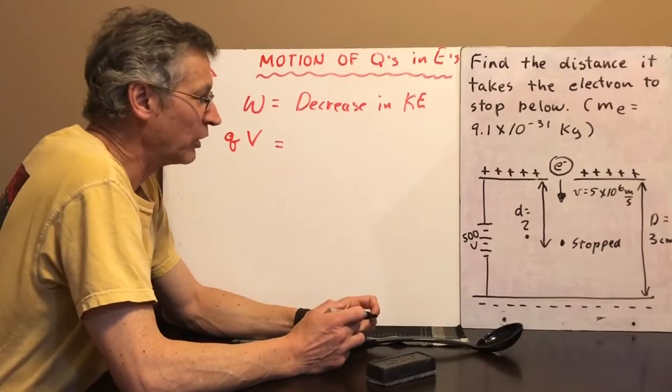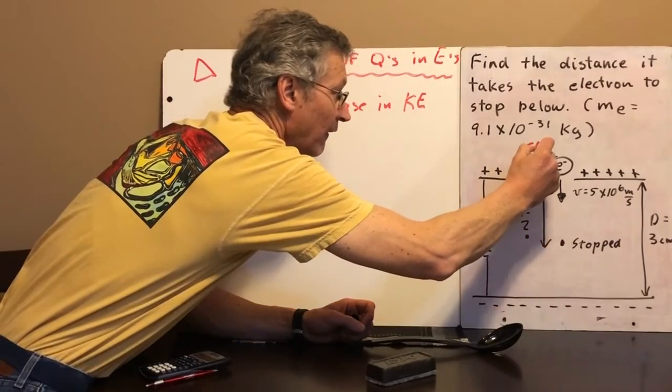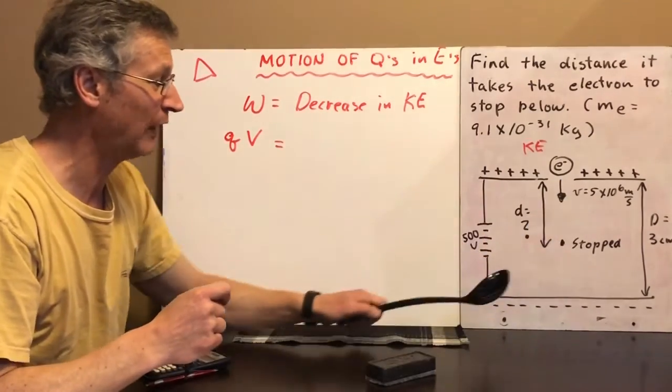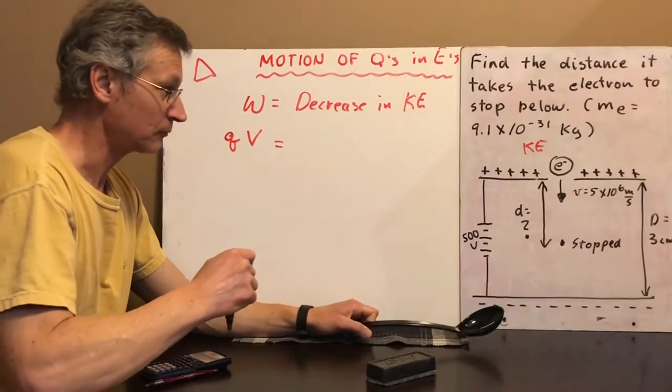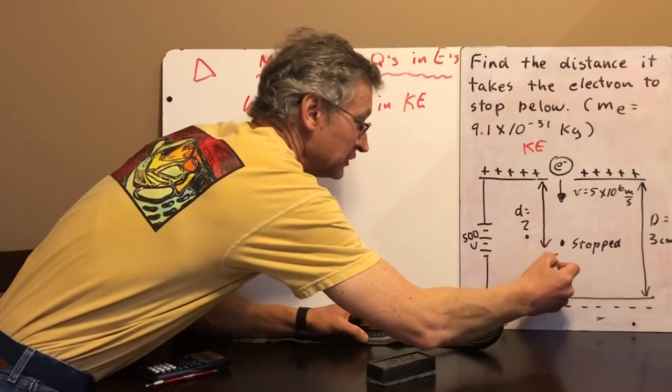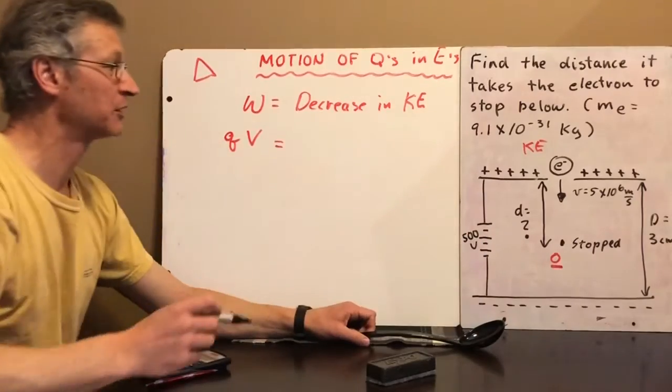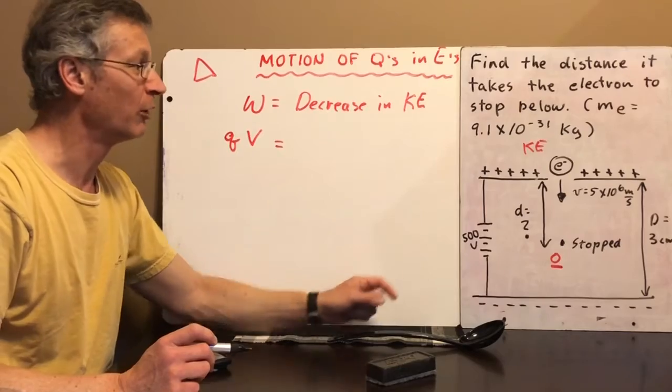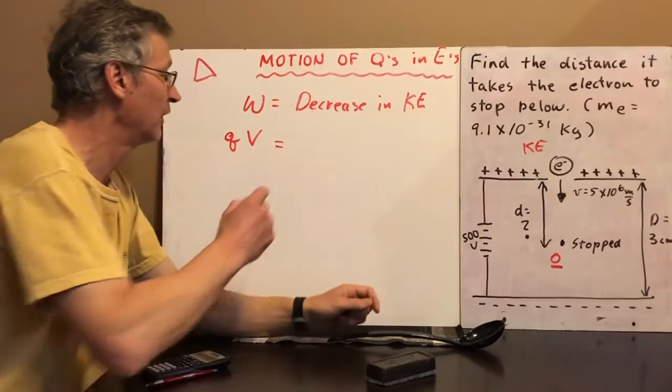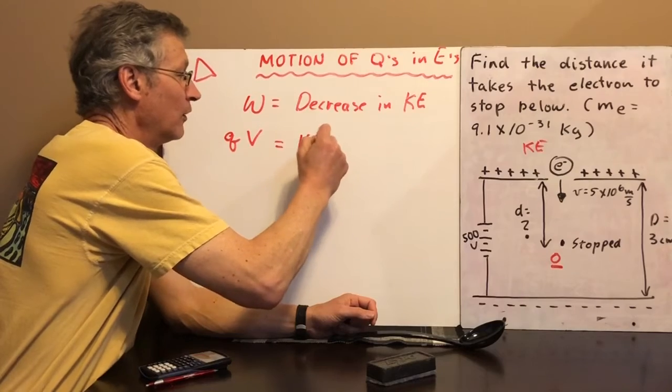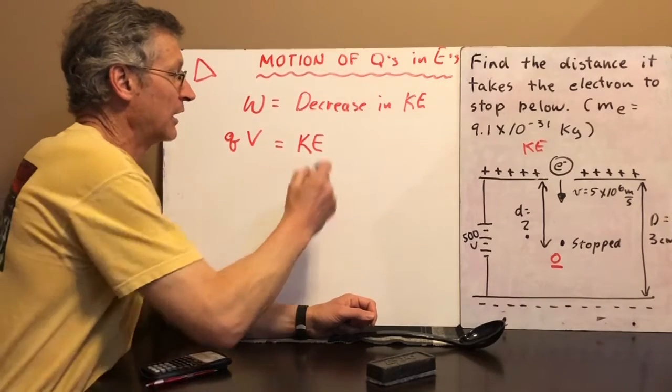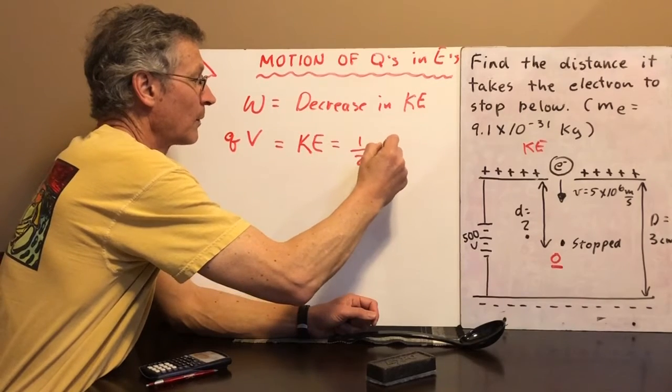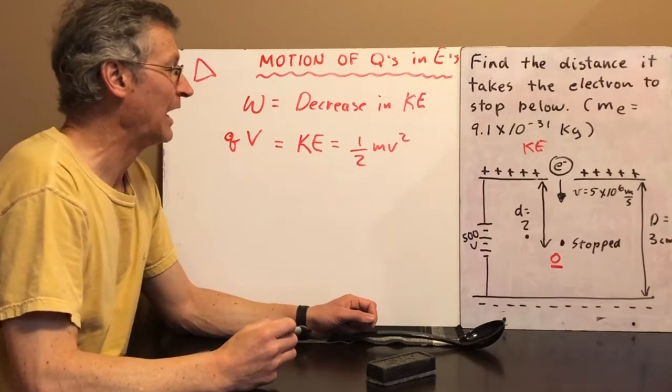The decrease in kinetic energy. Well, the electron has a fair bit of kinetic energy right here, because it's moving really fast, but when it's here, its kinetic energy is basically equal to zero. It's basically lost all its kinetic energy between here and here. So the decrease in kinetic energy is going to be equal to however much kinetic energy it had right there. And kinetic energy, of course, is equal to 1/2 mv squared.